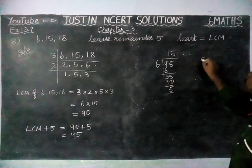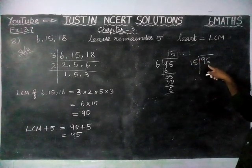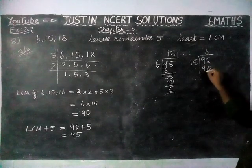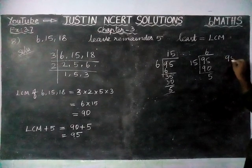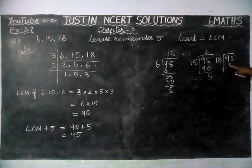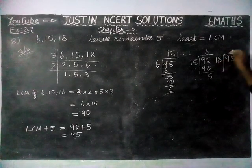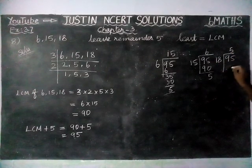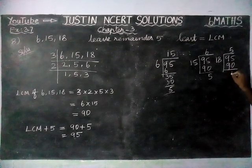Next, we are going to divide it by 15. In 95, 6 fifteens are 90, remaining 5. Next, in the same case, 95 divided by 18 — checking by 5: 5 eights are 40, remaining 4; 1 five is 5; 5 plus 4 is 9 — remaining 5.